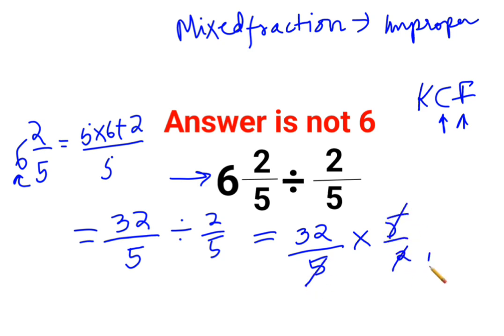Now this and this gets cancelled. This becomes 1 and this becomes 16. So the answer for this question is supposed to be 16.